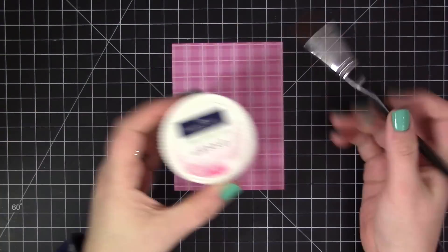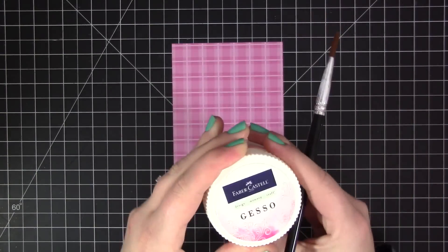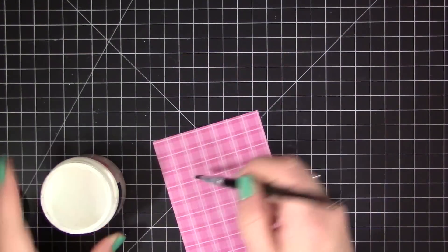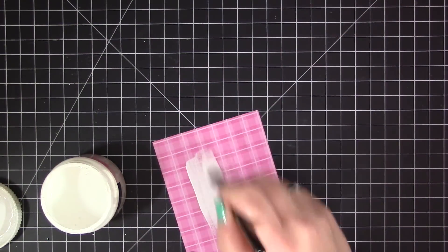I went ahead and took a piece of pink pattern paper from this pad and cut it down to 5 by 3 and 3/4 inches in size.